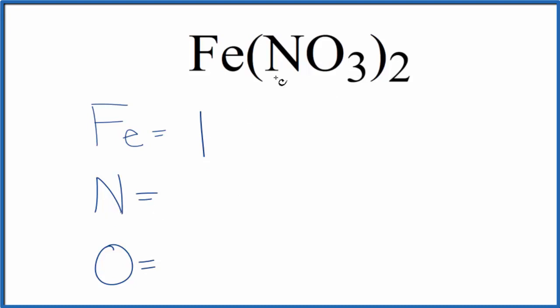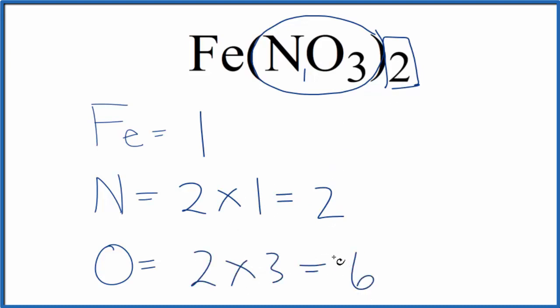The thing to know for the nitrogen and the oxygen is that the parentheses here, everything in parentheses is multiplied by 2. So we have 2 times 1. That gives us 2 nitrogen atoms. 2 times 3. That'll give us 6 oxygen atoms.